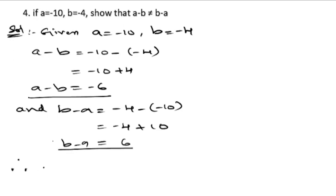a minus b is not equal to b minus a, because a minus b is negative 6 and b minus a is positive 6.